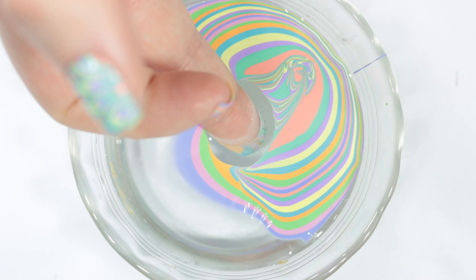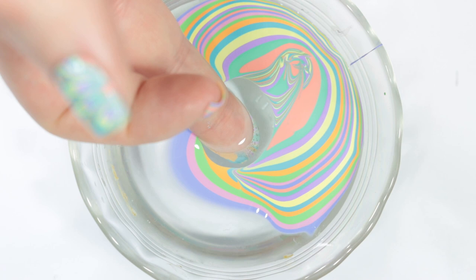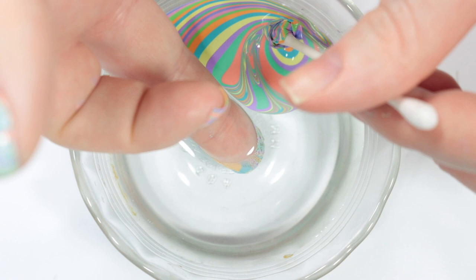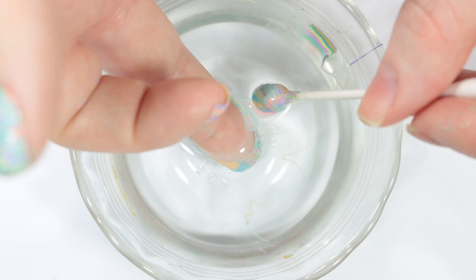Then you want to start blowing on the water to help the polish on the surface dry a little bit faster. Take a q-tip and start cleaning up that dried polish. It's really important that the surface of the water is completely clear before you take out your nail, otherwise you're going to ruin your marble.